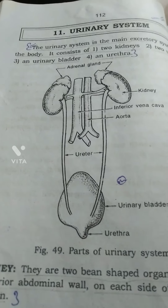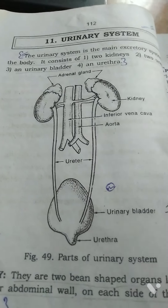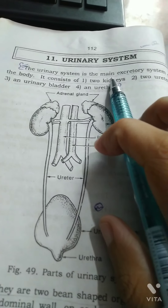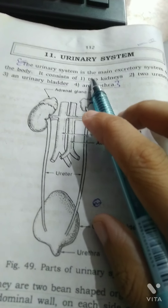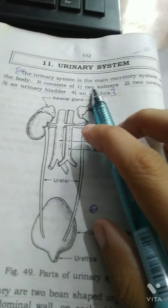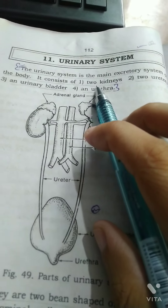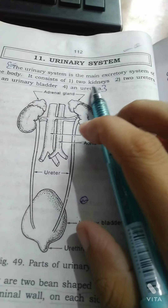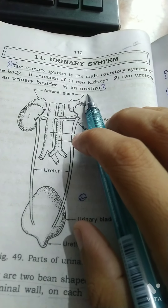Hello friends, this is our next topic of Anatomy Physiology: Urinary System. The urinary system is the main excretory system of the body. It consists of two kidneys, two ureters, one urinary bladder, and one urethra.